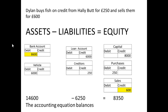He sells the fish for £600, so he has another £600 in the bank account. He has a sales account which is a credit of £600. We debit the bank account with another £600 to give it £8,600. The accounting equation is now £14,600 minus £6,250 equals £8,350 — it still balances.